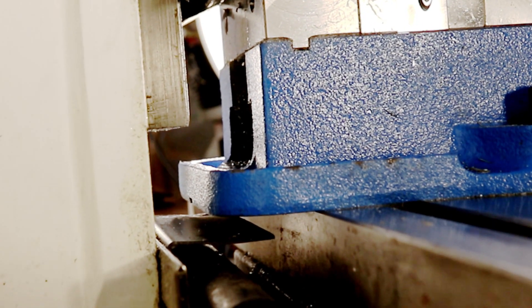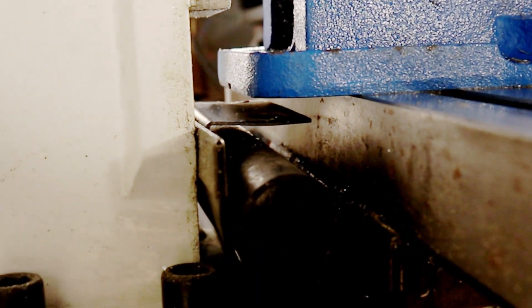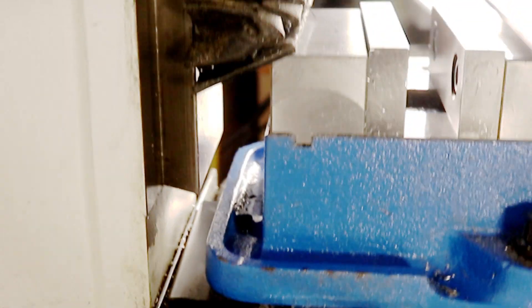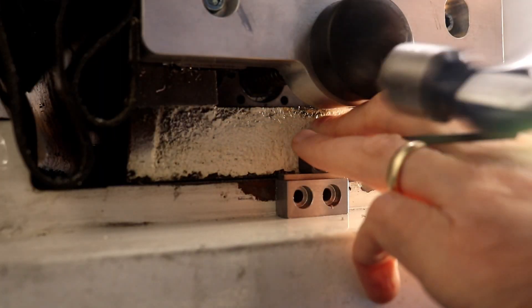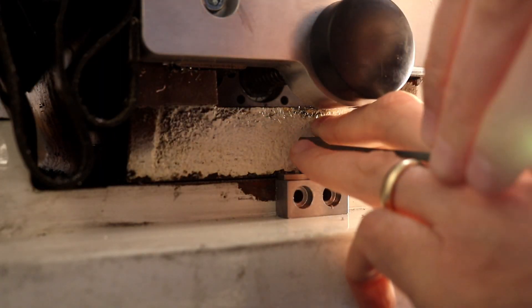I'm checking the clearance between the vise and the mill at the extreme end of the Y travel. The accordion way guard gets a little crushed at this position, but the ball nut collides with the mill space before the vise collides with the mill.